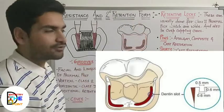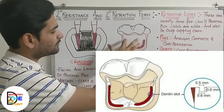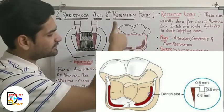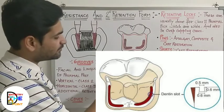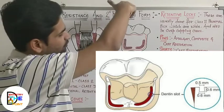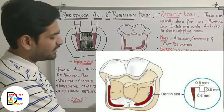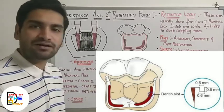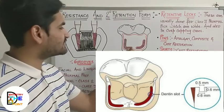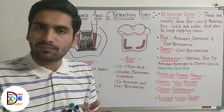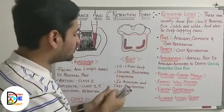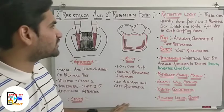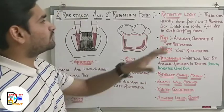Next is the slot. In the occlusal view of a tooth, slots are made vertically from the occlusal aspect, 1 to 1.5mm deep. They can be made on the occlusal surface, the bucco-axial wall, or the lingual-axial wall. They are mainly used in amalgam and cast restorations. Slots increase resistance form because more material gets incorporated, and they also increase the retention form of the cavity.